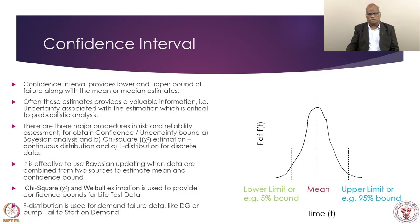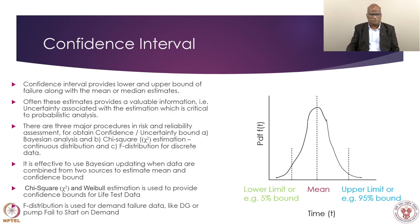Bayesian updating is effective when plant data is not sufficient. Chi-square and Weibull distributions are used for confidence bounds for life test data. Life testing provides solutions to many situations, particularly when looking for failure modes and failure mechanisms. The chi-square and Weibull distributions are extensively used, and the F-distribution is used where demand-related data is present — how many demands, how many failures. This is how we can understand upper and lower confidence bounds.